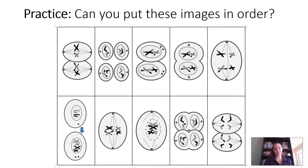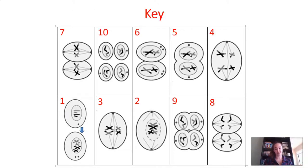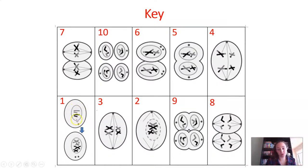Hopefully you really did pause and try this on your own. Now we'll walk through the key. These are the correct answers — the correct order to put these pictures in. In this first phase, I notice the cell has four chromosomes within its nucleus: two long and two short. Some chromosomes are gray and some are black, which I'll assume indicates one set is maternal chromosomes and one set is paternal chromosomes.